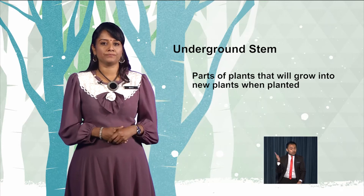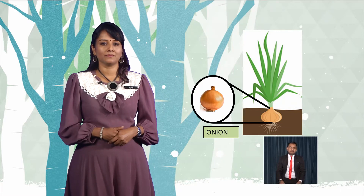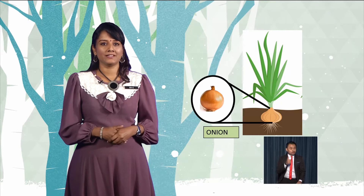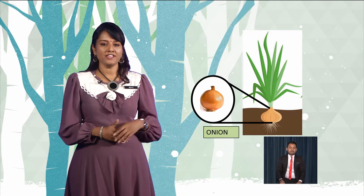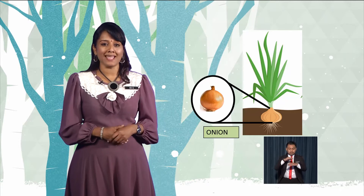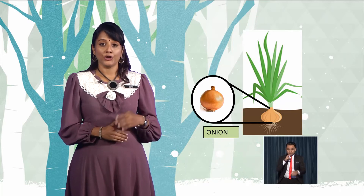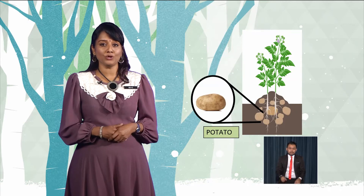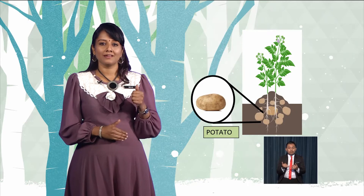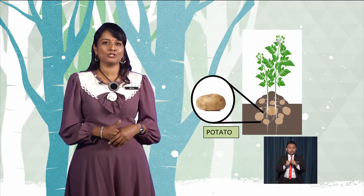Look at this picture — what is this? Good — it is an onion. The onion is a plant that reproduces through underground stems. Do you like to eat potatoes? Do you know how potatoes reproduce? Great — potatoes reproduce through underground stems.